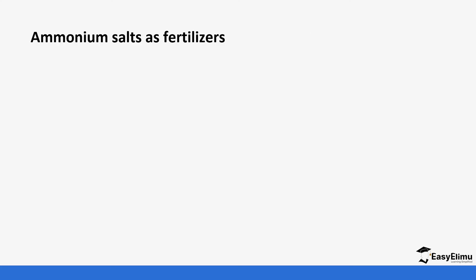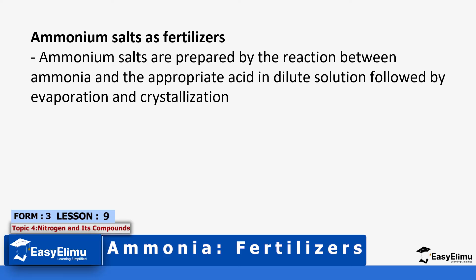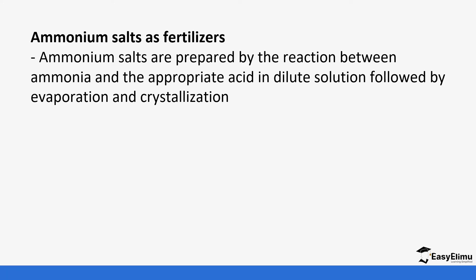Ammonium salts are usually formed when ammonia reacts with acids, mostly in dilute form, followed by evaporation and crystallization. A salt is produced and then it undergoes crystallization — the crystals are formed, and this is what is usually added to make the fertilizer.